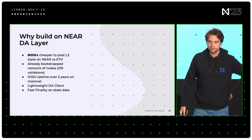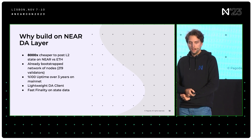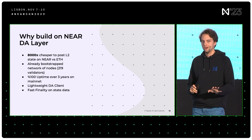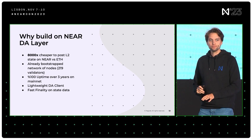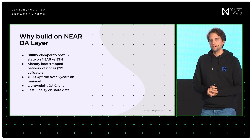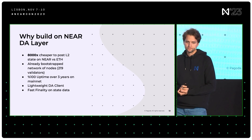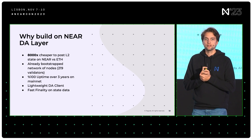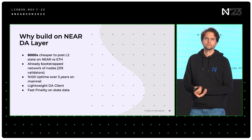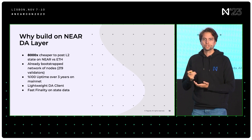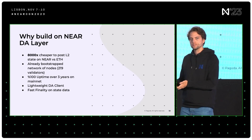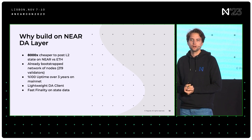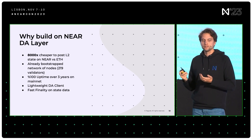Why would you build on Near DA layer? It's very cheap — we've found optimizations and it's now 8,000 times cheaper than posting on ETH. We're going to work on optimizing it further. Something really important: we already have a bootstrap network with 100% uptime for three years, which says you can trust it — the security of the network is already running and working. The validators are already up and running, so the bootstrap of the network has already been done.